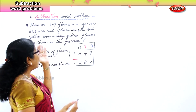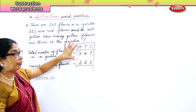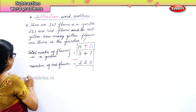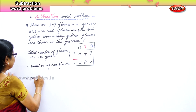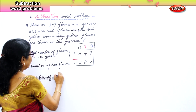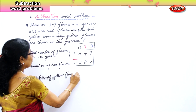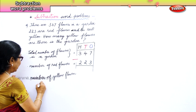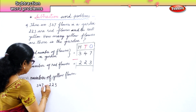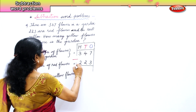What is asked? The question is: how many yellow flowers are there in the garden? Total number of flowers in the garden is 347. Number of red flowers is 223. Therefore, number of yellow flowers — that is what we need to find. 347 minus 223. Now you write that down so you understand.